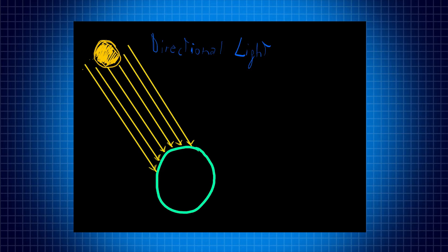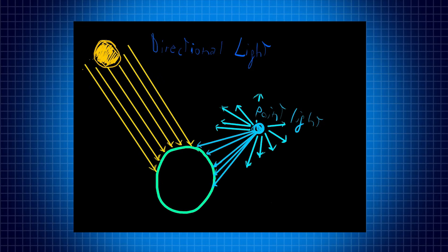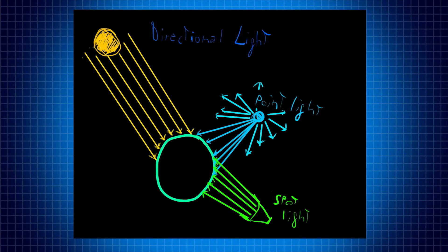The second type is the point light, which we can consider like a sphere that emits light in all directions. A particularity of the point light is that as the light source goes farther and farther, the intensity of the light will diminish according to a certain function. The third and last light type is a spotlight, which is a kind of light that illuminates just a precise area and the light doesn't go outside of the cone of illumination.